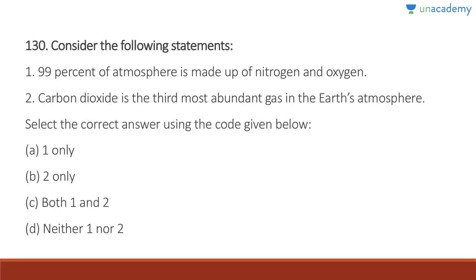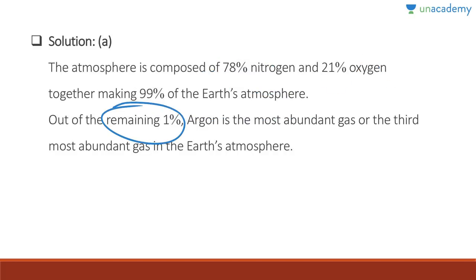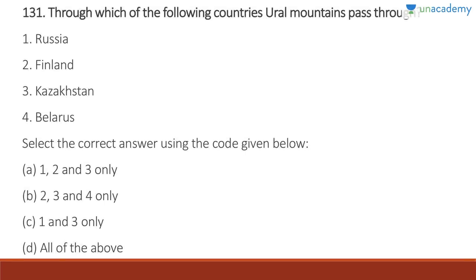Question 130: 99% of the atmosphere is made up of nitrogen and oxygen — absolutely correct. CO2 is the third most abundant gas in the Earth's atmosphere — wrong, because 0.9% is almost all argon. So 99.9% is nitrogen, oxygen, and argon. Answer is A. The atmosphere is composed of 78% nitrogen and 21% oxygen (making 99%), and out of the remaining 1%, argon is the most abundant — the third most abundant gas overall.